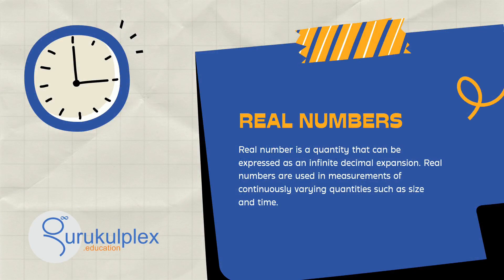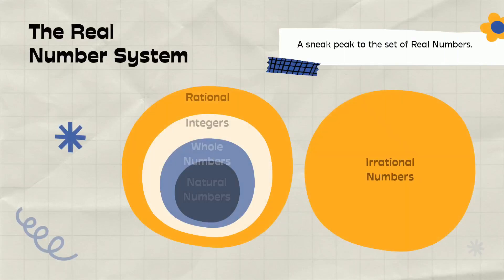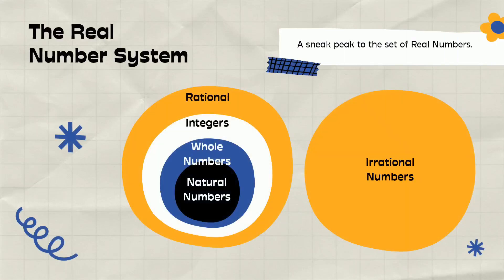Positioned on an infinitely stretching number line, real numbers find their place in both positive and negative directions. Real numbers encompass two primary classifications: rational and irrational numbers.